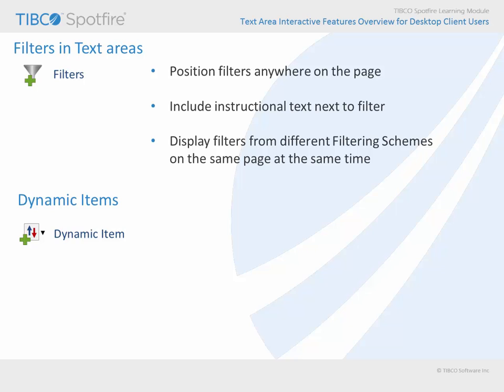Dynamic items which can be inserted into text areas are the same elements you will find in a graphical table visualization: sparklines, calculated values, icons, and bullet graphs. These will adjust dynamically according to the indicated filtering scheme. And, like filters, their inclusion within text areas represents an opportunity to incorporate these elements right along with the instructional text, which places that element into context, rather than being isolated in a graphical table visualization.